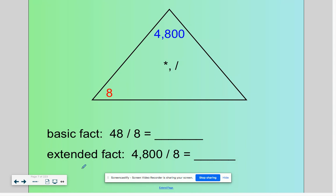If our basic fact for 48 divided by eight is six, that helps us figure out that 4800 divided by eight is 600. Notice 6 times 8 is 48 and the two zeros here.